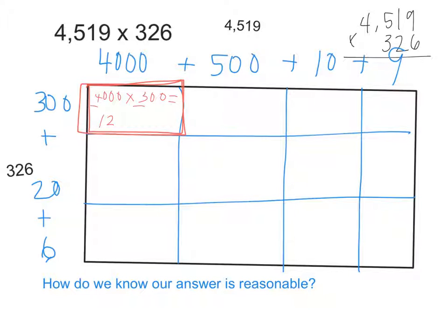And how many factors of 10 do I have? 5. Adish? 5. So I can add 5 zeros. So the product of those, or the area of this small rectangle, is 1,200,000. Go ahead and let's find the areas of all the other rectangles.